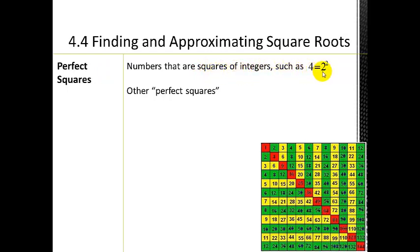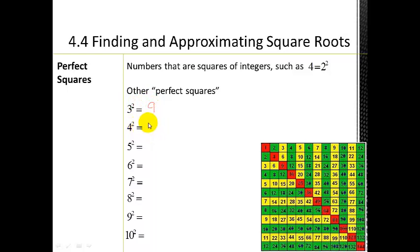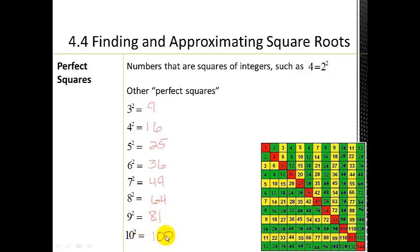So two squared would be four, making four a perfect square. You can go through the integers and find all your perfect squares: three squared is nine, four squared is sixteen, five squared is twenty-five, six squared is thirty-six, seven squared is forty-nine, eight squared is sixty-four, nine squared is eighty-one, and ten squared is one hundred.